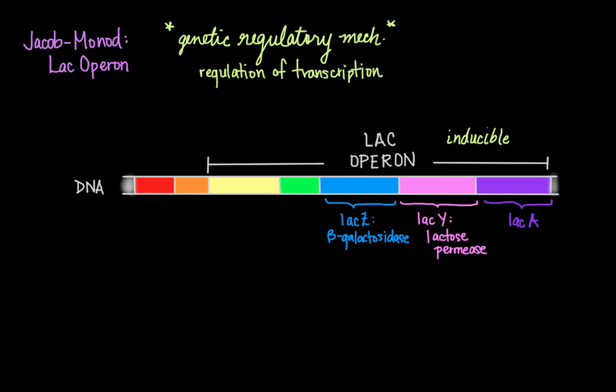Finally, the LAC-A gene codes for thiogalactoside transacetylase. Only the LAC-Z and the LAC-Y genes are actually needed for lactose catabolism; LAC-A is not as important in terms of understanding how the LAC operon works. Besides these three structural genes — LAC-Z, Y, and A — there are two regulatory sequences contained in the LAC operon.